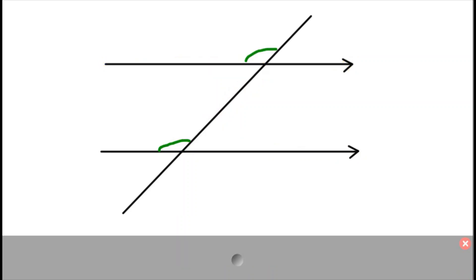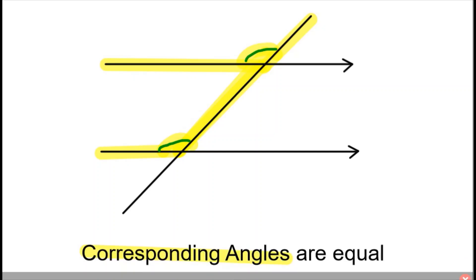Our next example is where we've got an angle created by our top parallel line and the line intersecting it, and then the other parallel line and the line intersecting it. This one kind of looks like an F. Our F is upside down. If you think about it, this top angle is being shifted downwards into our bottom angle there. So we call these corresponding angles, and they are also equal.